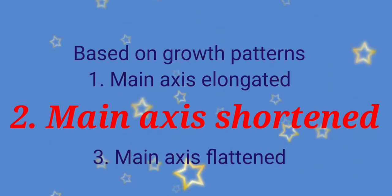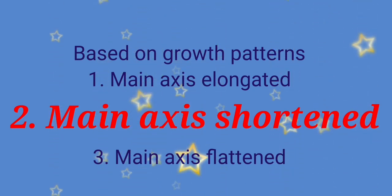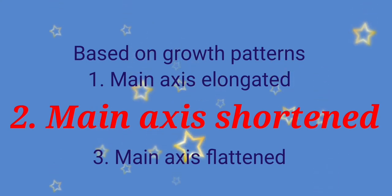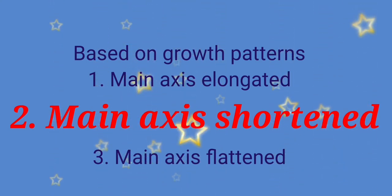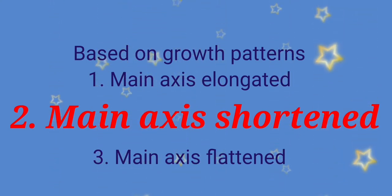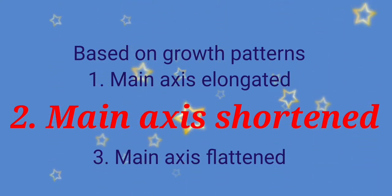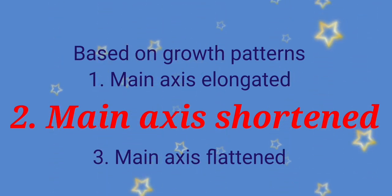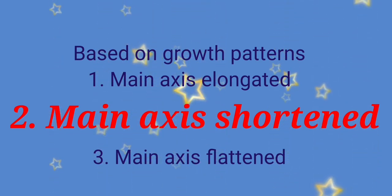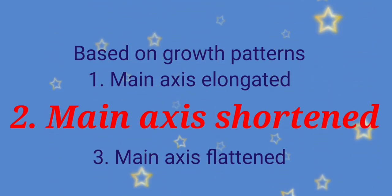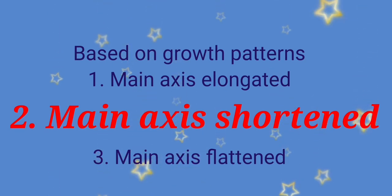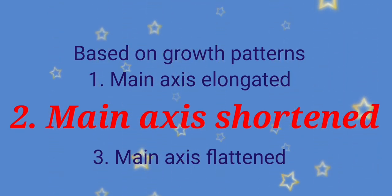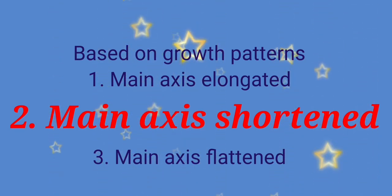Based on the growth of the main axis, the racimose inflorescence is classified into three types: the main axis elongated, which has already been discussed; the main axis shortened; and the main axis flattened.